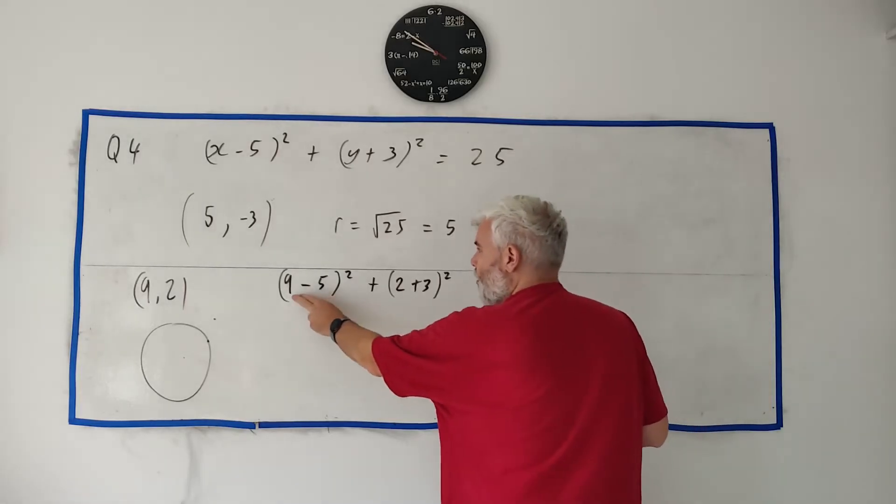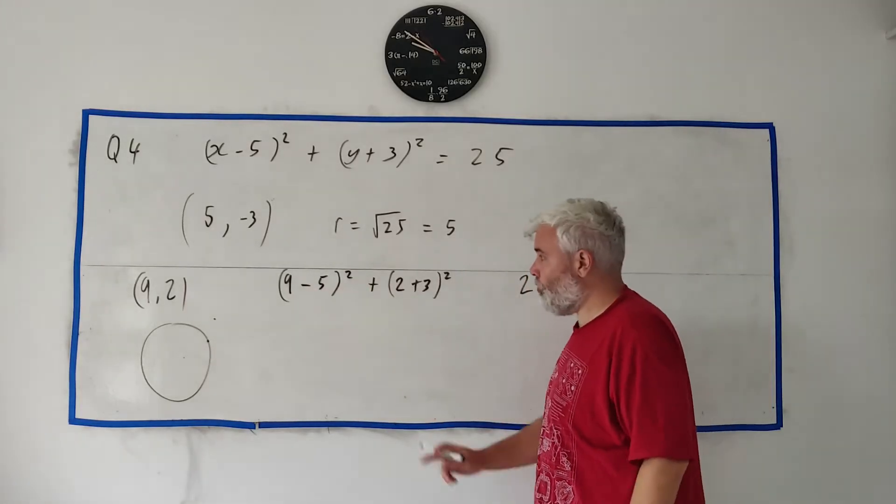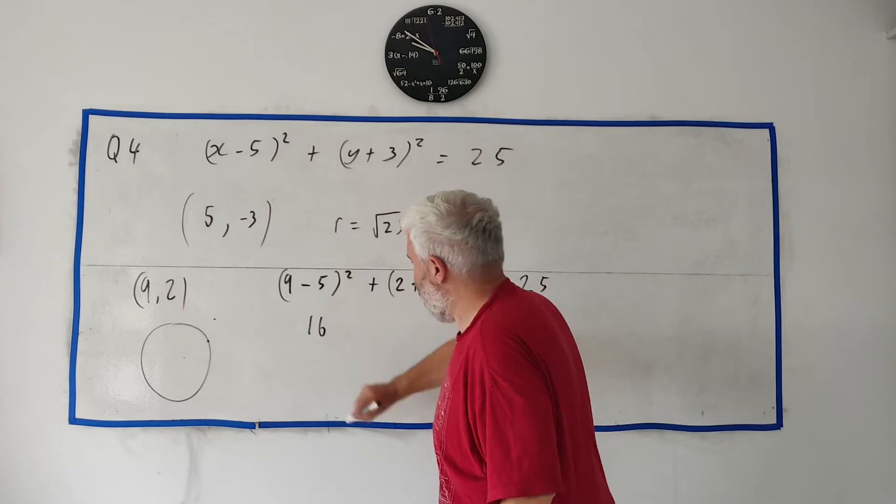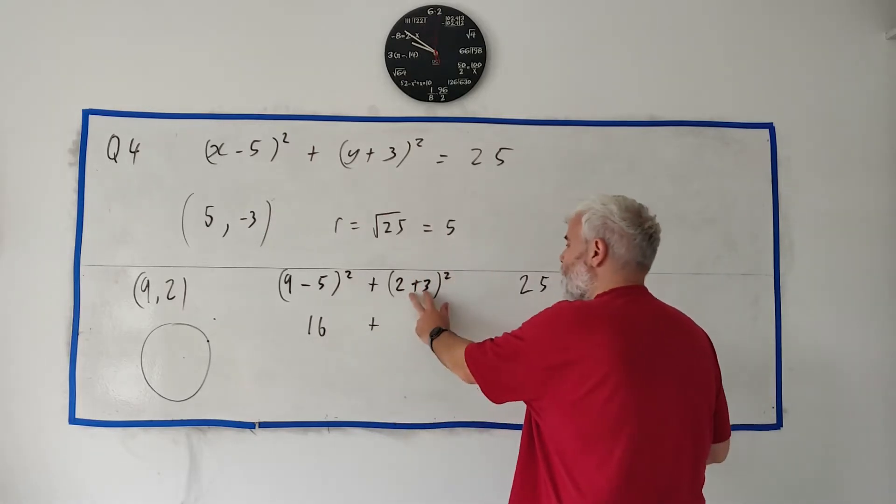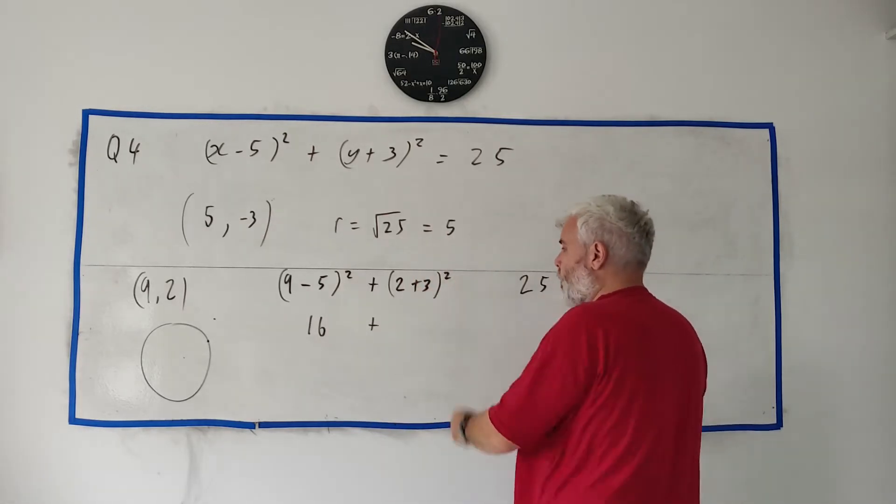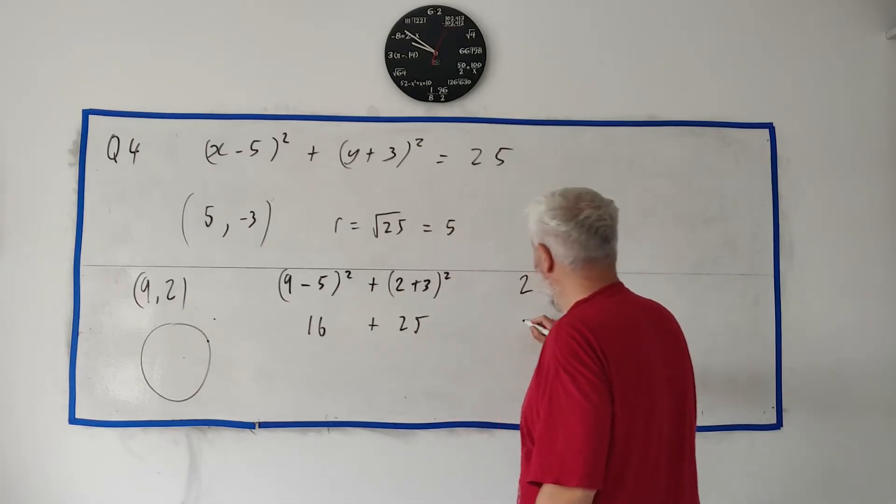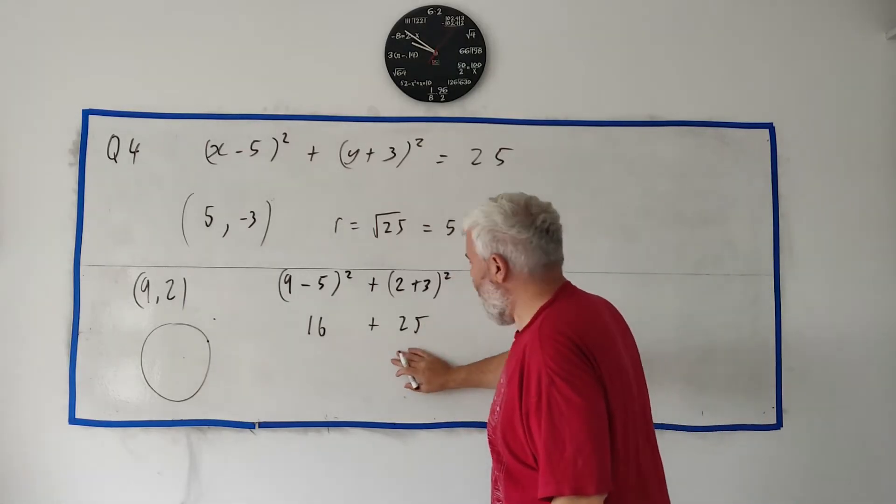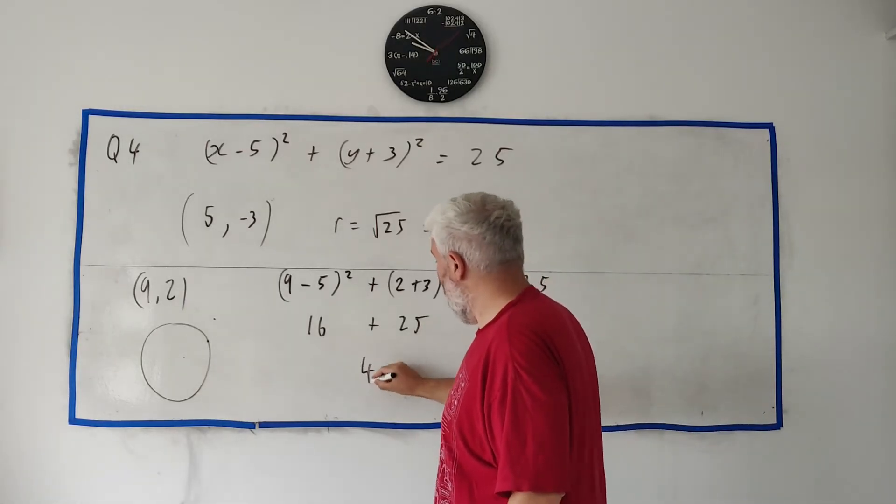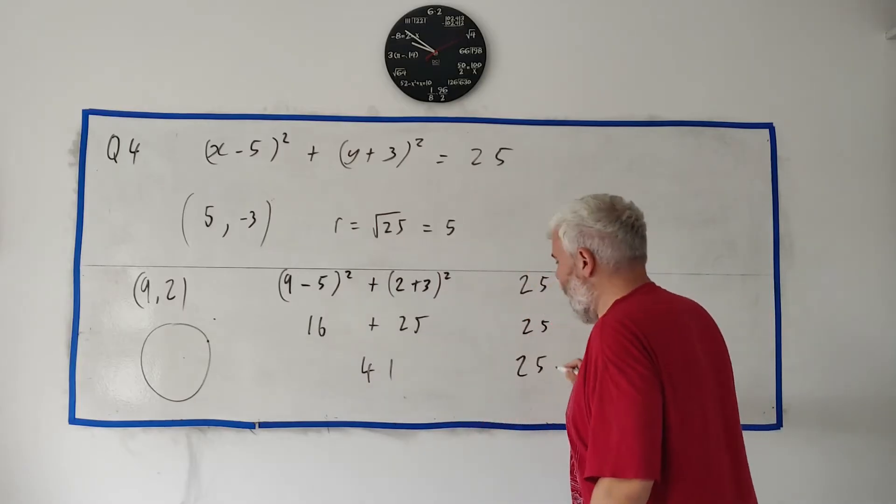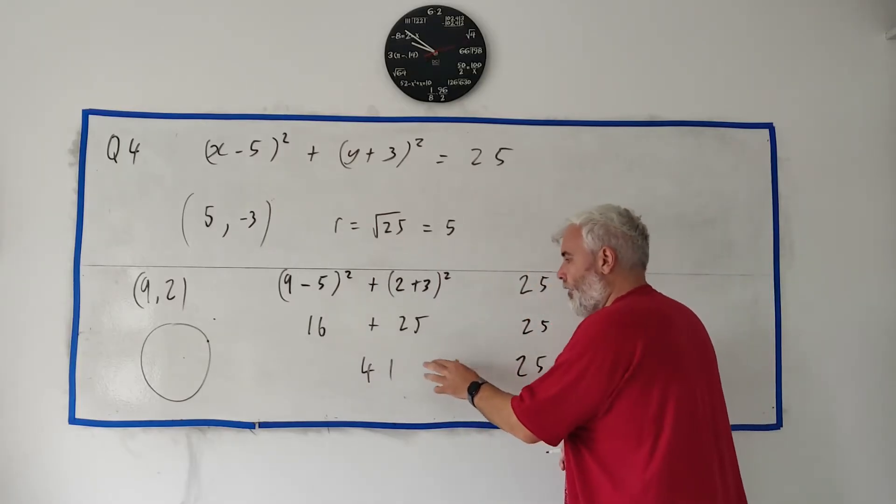If we clean this up, 9 minus 5 is 4. 4 squared is 16. 2 plus 3 is 5. 5 squared is 25. We leave 25 here. Add these together we get 41.